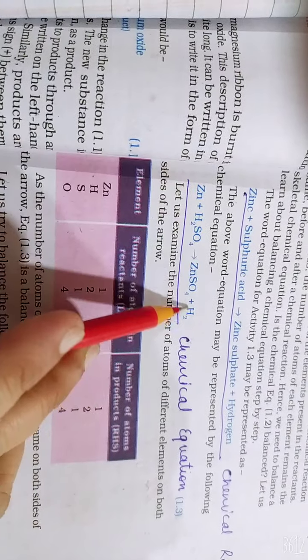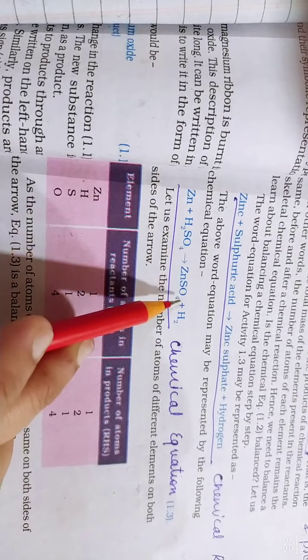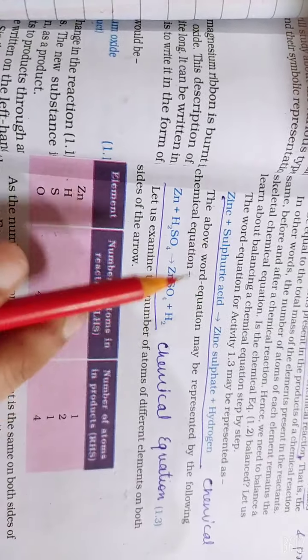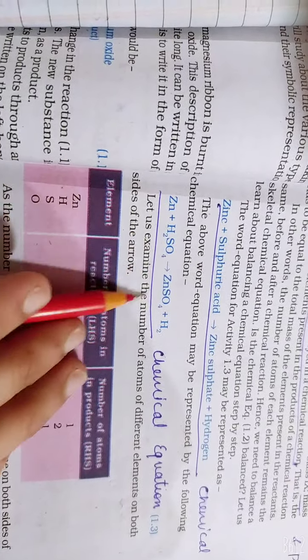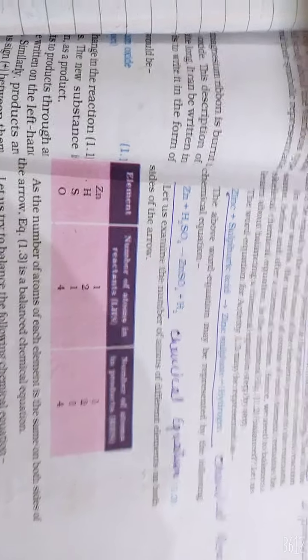Like this already balanced. Here is Zinc 1, here is Zinc 1. Here is Hydrogen 2, here is Hydrogen 2. Here is S1, here is S1. Here is O4, here is O4. So they are already balanced. If they are already balanced, they are already balanced and skeletal. They are both chemical reactions. Okay? Now I am teaching you another 2-3 examples through balancing.